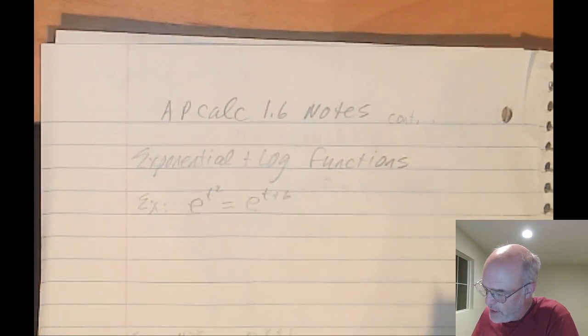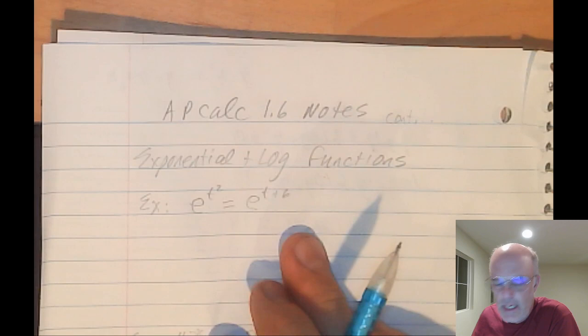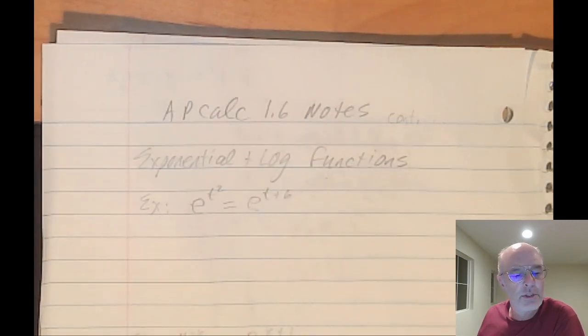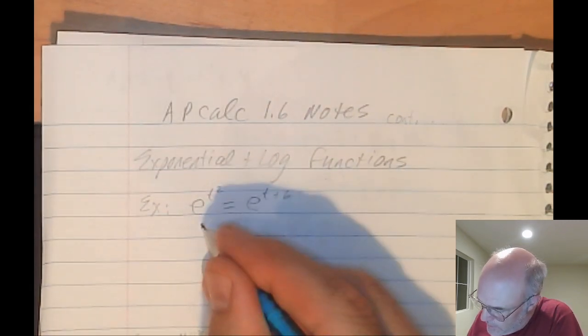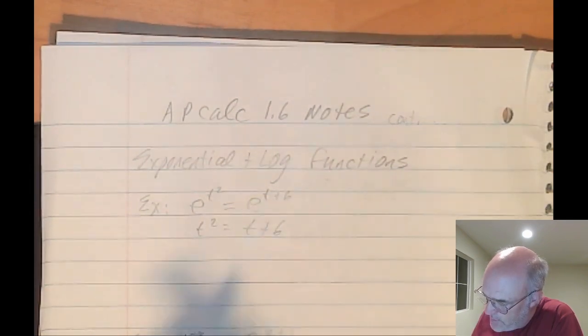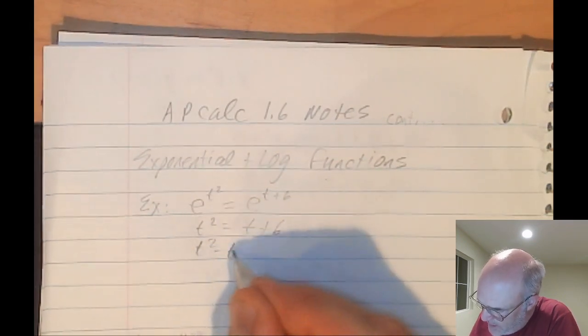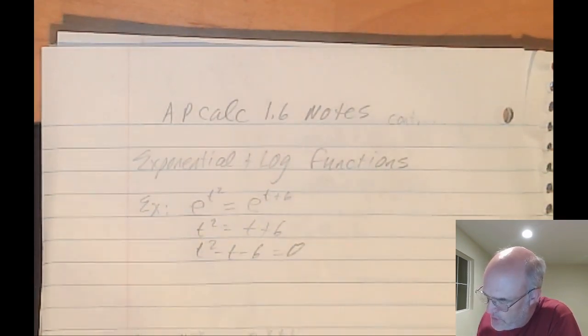Here's an example. E to the t squared equals e to the t plus 6. Of course, the bases are the same, so the exponents are equal. t squared equals t plus 6. t squared minus t minus 6 equals 0.